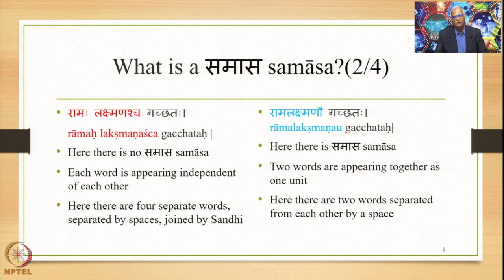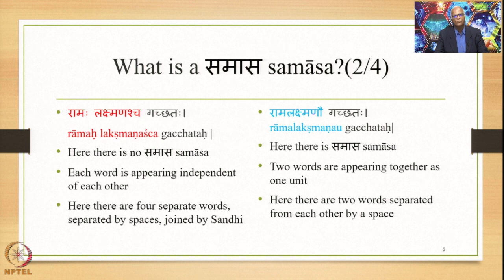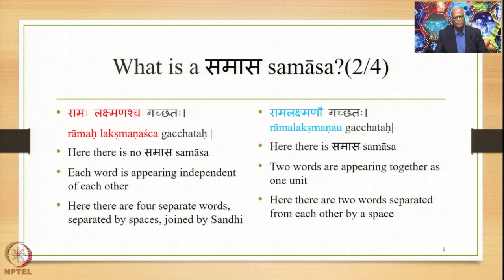In the sentence Ramalakshmanao Gatchataha, there are only two words separated by a space. In the sentence on the left-hand side there were four words, whereas on the right-hand side there are only two. Ramaha, Lakshmanao, and Gatchataha come together; however, one word disappears and Ramaha and Lakshmanao get compounded to form one unit — Ramalakshmanao. This is a compound. This is Samasa.